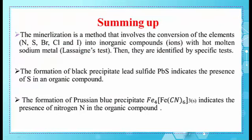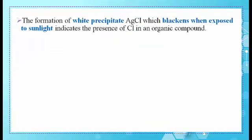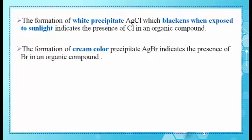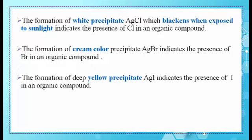Let's sum up the ideas in this video. First, mineralization is a method that involves the conversion of nitrogen, sulfur, bromine, chlorine, and iodine into inorganic compound ions with hot molten sodium metal (Lassaigne's test), then they are identified by specific tests. The formation of black precipitate lead sulfide (PbS) indicates S. The formation of Prussian blue precipitate Fe₄[Fe(CN)₆]₃ indicates nitrogen (N). The formation of white precipitate AgCl (blackens in sunlight) indicates chlorine. The formation of cream precipitate AgBr indicates bromine. The formation of deep yellow precipitate AgI indicates iodine.